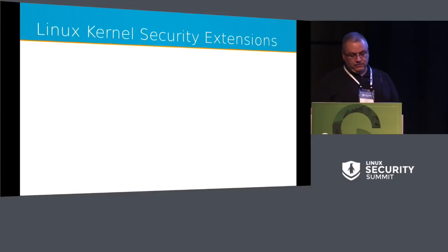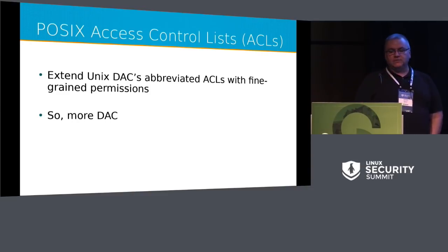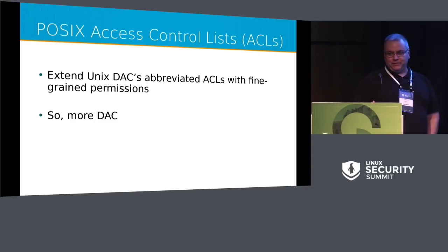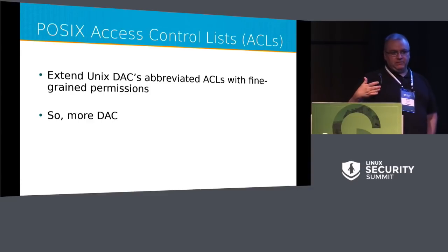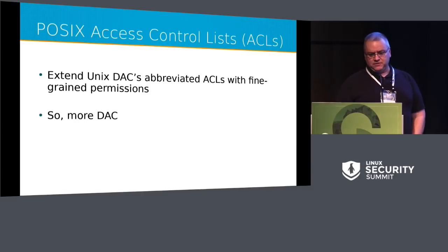Some of these components include POSIX ACLs, access control lists. This takes what's known as abbreviated ACLs in the Unix DAC model and makes them fine-grained — instead of just having user, group, and other permissions, you can specify which particular users and groups, so it's much more fine-grained. That's still discretionary access control, so more flexible and more complicated but still has some fundamental issues. This was based on an early POSIX draft standard.